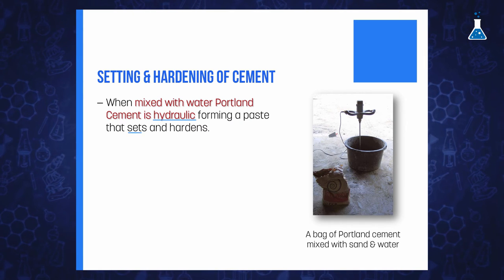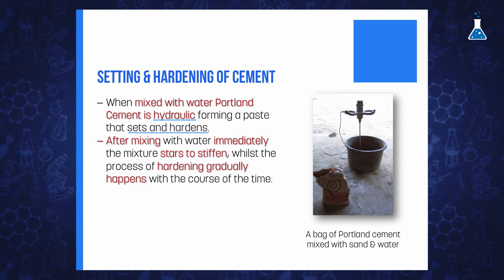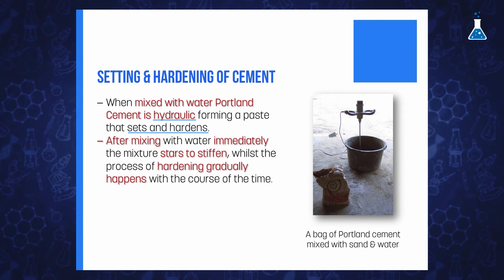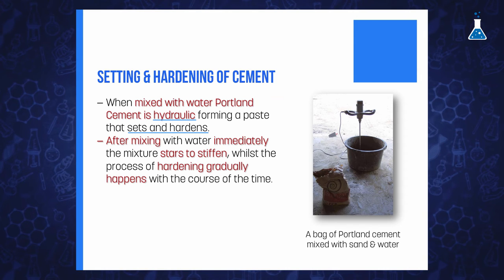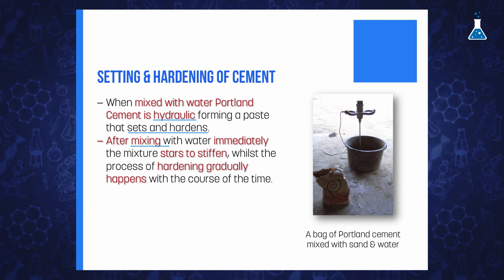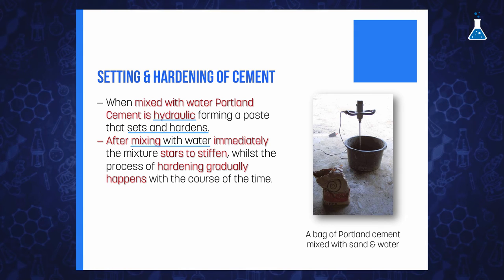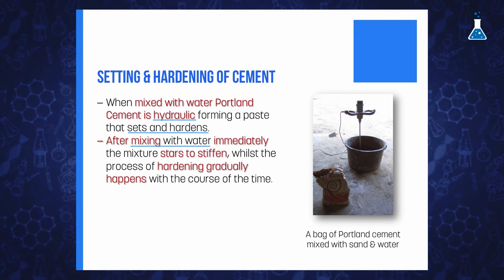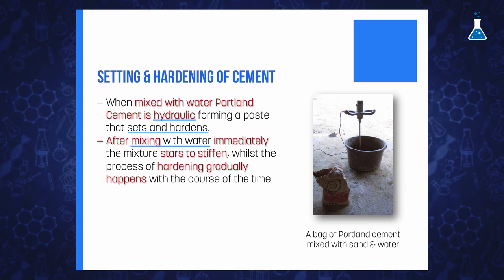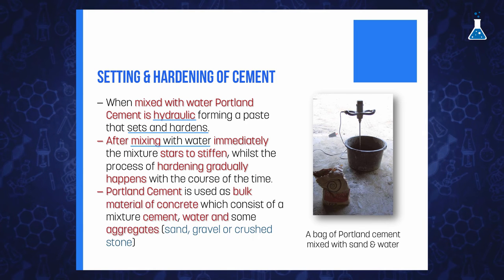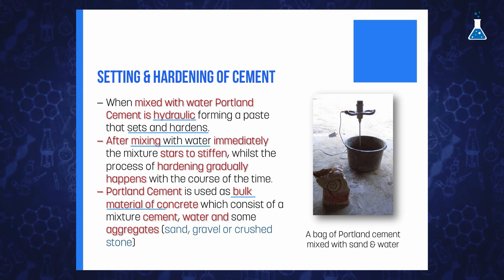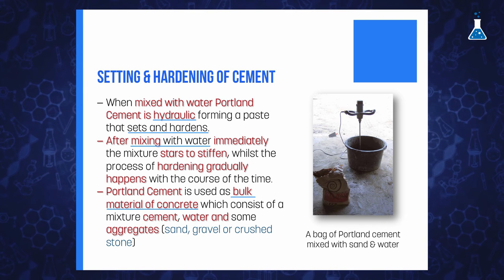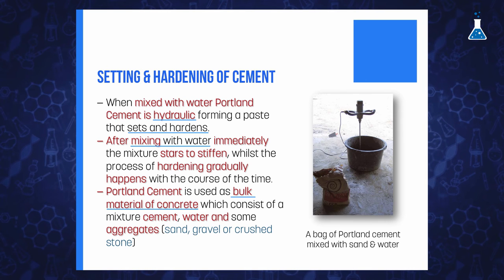Portland cement is hydraulic — when mixed with water it forms a paste that sets and hardens. This process can be enhanced by the presence of an excess of water. The process of setting and hardening occurs at different moments: when cement is mixed with water, stiffening begins immediately, while hardening is a gradual gain in strength over time. Portland cement is mainly employed as the bulk material of concrete, which consists of a mixture of cement with aggregates and water.